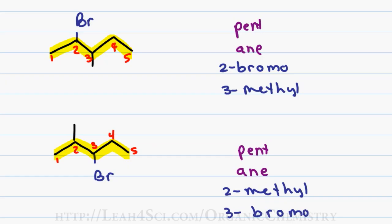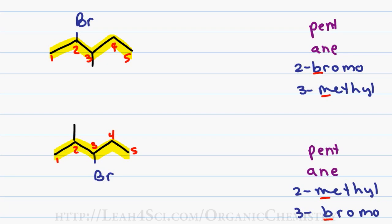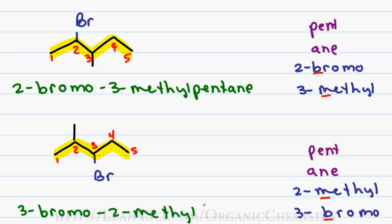Putting the name together, the prefixes are arranged in alphabetical order regardless of their number. Since B comes before M, bromine is going to be named first. That means the first molecule will be 2-bromo-3-methylpentane and the second molecule will be 3-bromo-2-methylpentane.